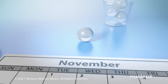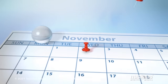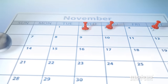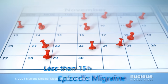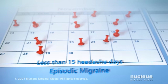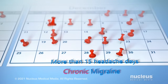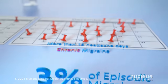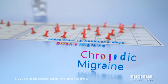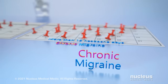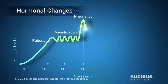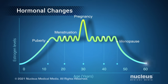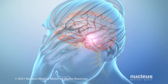It is important for treatment planning to distinguish migraine on the basis of frequency and character of attacks. Less than 15 headache days per month is episodic migraine; 15 or more headaches per month is chronic migraine. Each year, about 3% of those with episodic migraine become chronic. This worsening may be due to changes in hormones, as well as cumulative effects on the nervous system from years of migraine attacks.